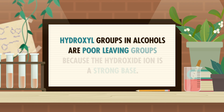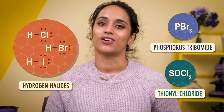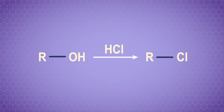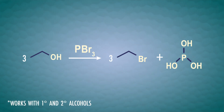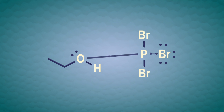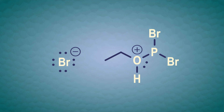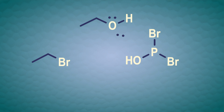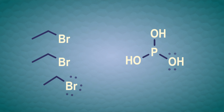Converting alcohols to alkyl halides is a really useful tool for chemists. Remember that hydroxyl groups in alcohols are poor leaving groups because the hydroxide ion is a strong base. So if we can turn the hydroxyl group into a good leaving group like a halide, we can make it more useful for other reactions. There are three reagents we can use: hydrogen halides, phosphorus tribromide, and thionyl chloride. With phosphorus tribromide, the electron pair on the oxygen attacks the phosphorus atom, kicking out a bromide ion, which then acts as a nucleophile and kicks out the oxygen. Overall, one mole of phosphorus tribromide can convert three moles of an alcohol into three moles of an alkyl bromide.